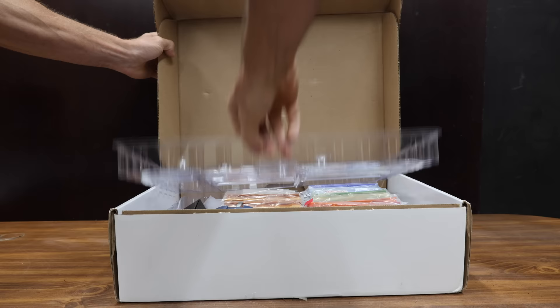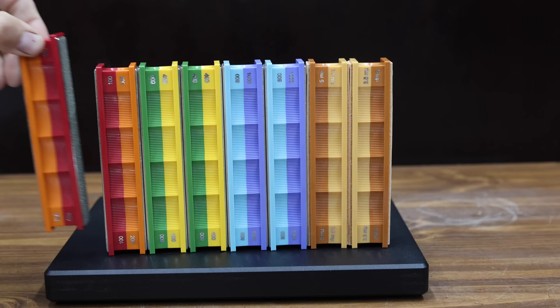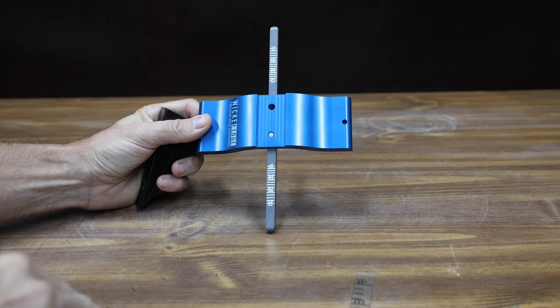At a price of $600 is this Wicked Edge Pro Pack 1. The Wicked Edge Pro Pack 1 is made in USA. The sharpening stones include 100 grit, 200, 400, 600, 800, and 1,000 grit stones. It also includes a 5 and a 3.5 micron diamond and leather strop pack. Sharpening angles range from 15 to 30 degrees with 1 degree increments.